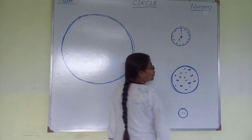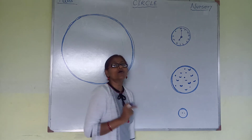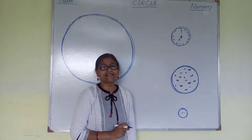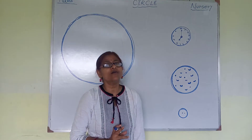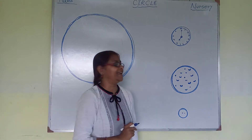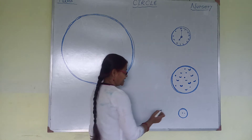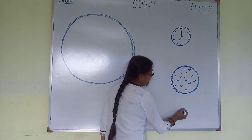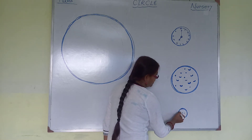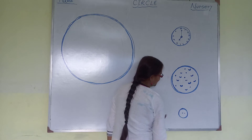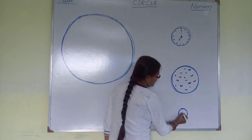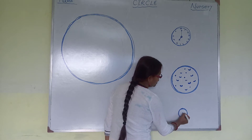It has no corners and no sides. It is a button. A button looks like a circle. Understood?